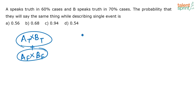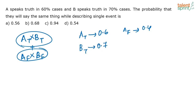That is the answer we are looking for. A tells the truth 60% of the times, that is 0.6. In probability, total probability is always 1. So A will tell the truth 0.6 times and A will lie 1 minus 0.6, which is 0.4, or 40% of the times. Similarly, B will tell truth 70% of the cases, that is 0.7. B will lie 1 minus 0.7, which is 0.3. So probability A tells truth is 0.6, probability B tells truth is 0.7, probability A tells lie is 0.4, and probability B tells lie is 0.3.